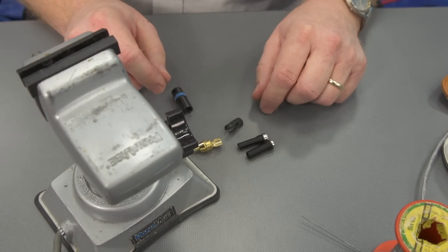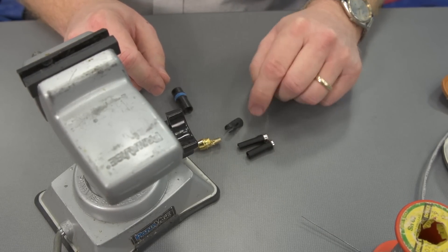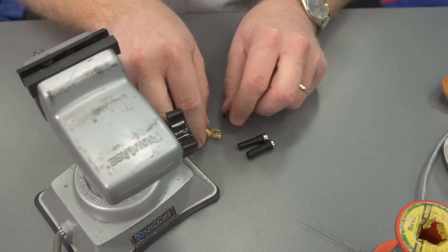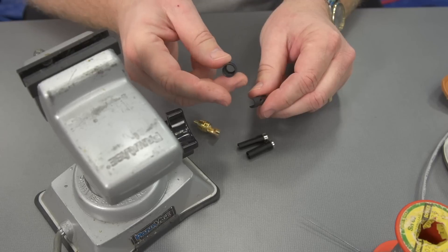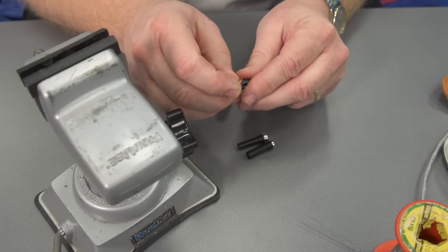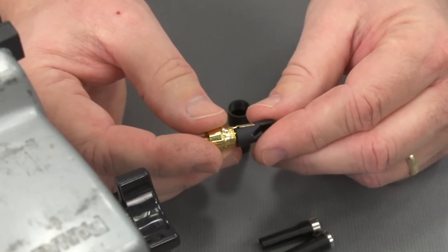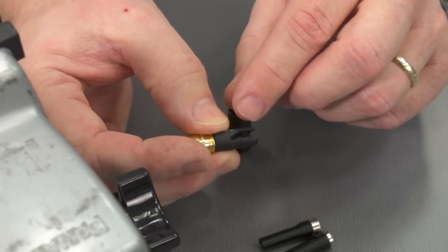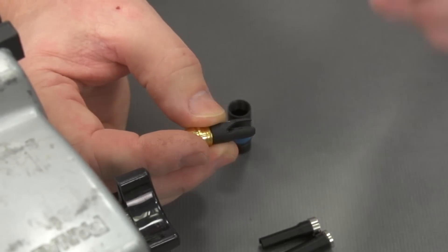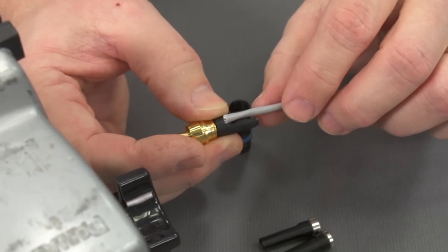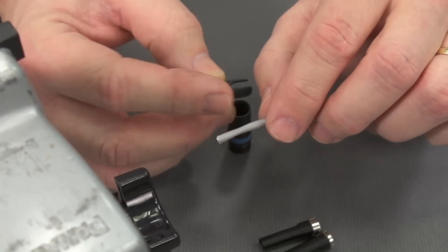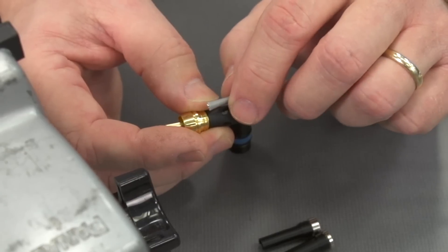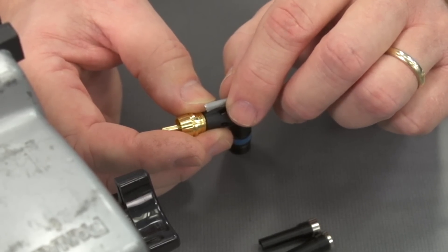We're going to find two different size little strain reliefs here that go out the back, the connector itself, and the strain relief shell. This is going to go together in a half shell or clamshell arrangement. There are little serrations here in the back, and to test fit this, I want to make sure that outer jacket of the cable is actually going to be under that strain relief, so I'm not going to be removing too much jacket in this case.